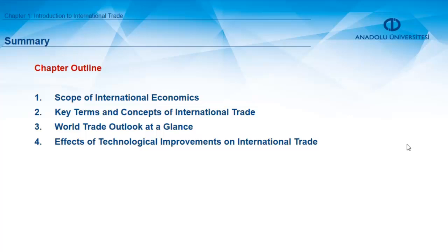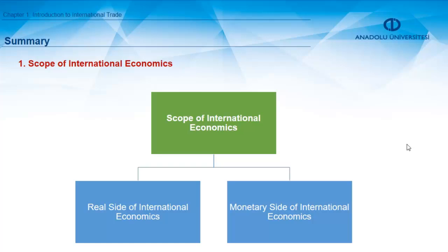You see our chapter outline. The first title will be the scope of international economics, introducing its coverage. The second title is the key terms and concepts of international trade. The third title deals with the world trade outlook at a glance. And the last title covers the effects of technological improvements on international trade.